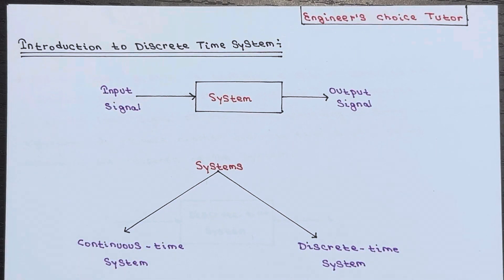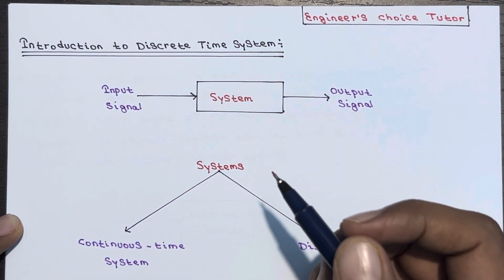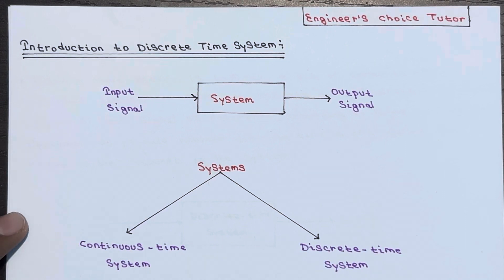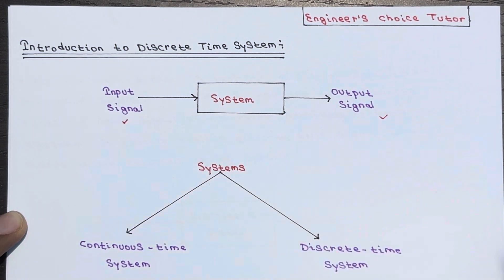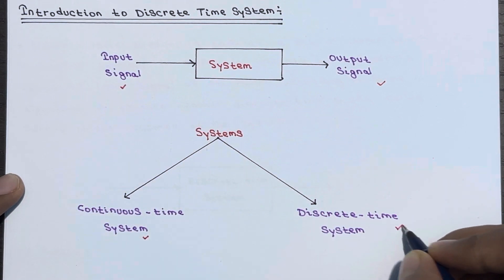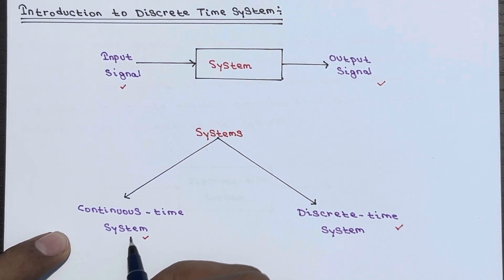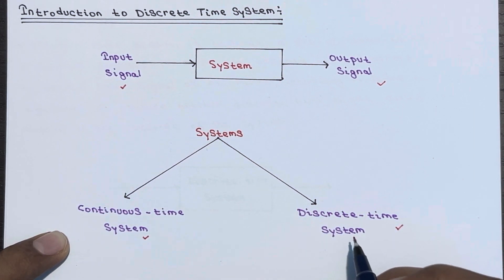In this lecture we will be discussing the introduction to discrete time systems. A system is a collection of functional blocks that work together to produce an output signal in response to an input signal. There are basically two types of system: one is a continuous time system and another one is a discrete time system. A continuous time system processes continuous time signals while a discrete time system processes discrete time signals.